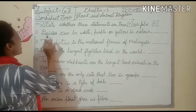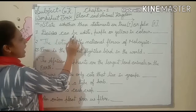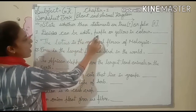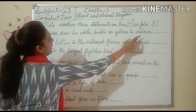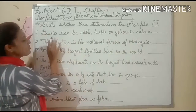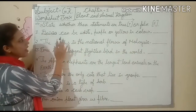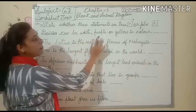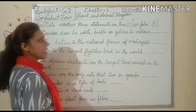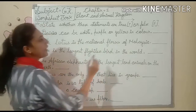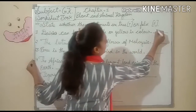Number 1: Desis can be white, purple and yellow in color. The desis flower — can it be white, purple and yellow in color? Yes. So you write here: true.